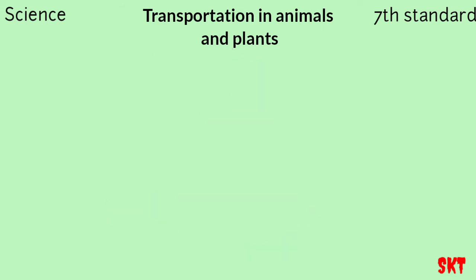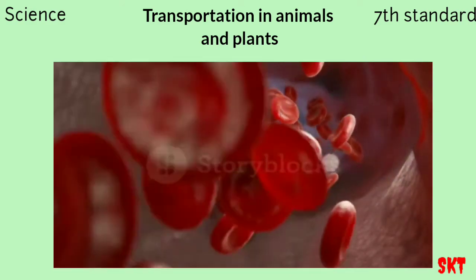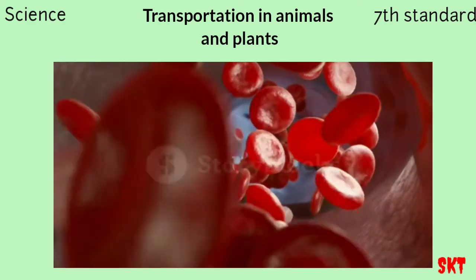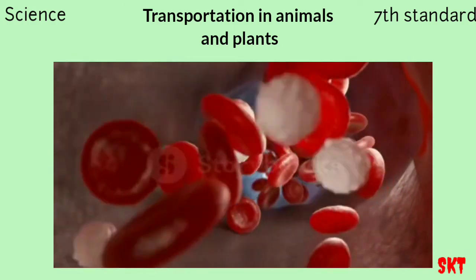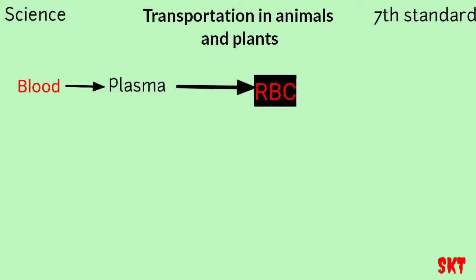In our body we have a bodily fluid called blood, and blood transports various substances from one part to another. Blood is composed of a fluid called plasma, in which different types of cells are suspended. For example, red blood cells (RBCs), which contain a red pigment called hemoglobin. In human beings, RBCs are present and they contain the red pigment hemoglobin.